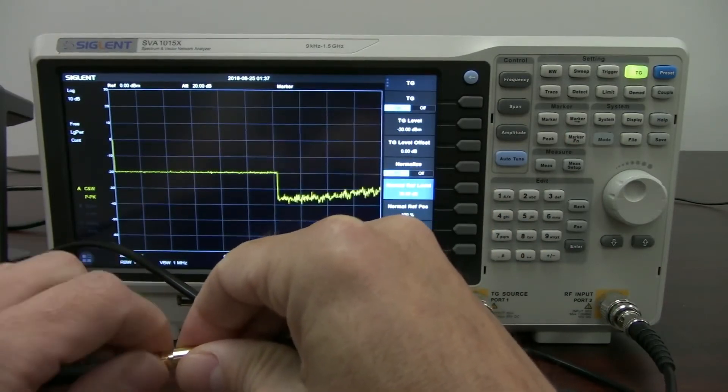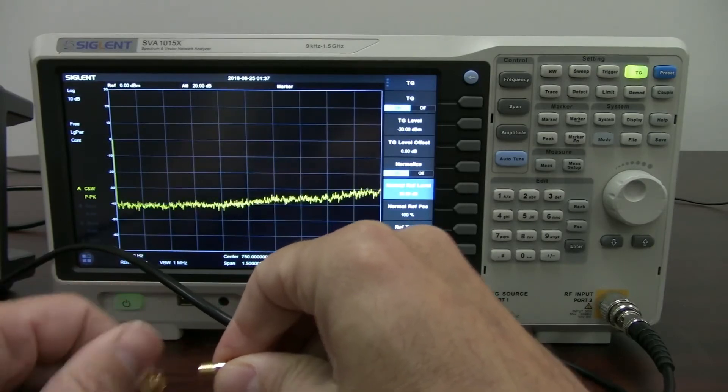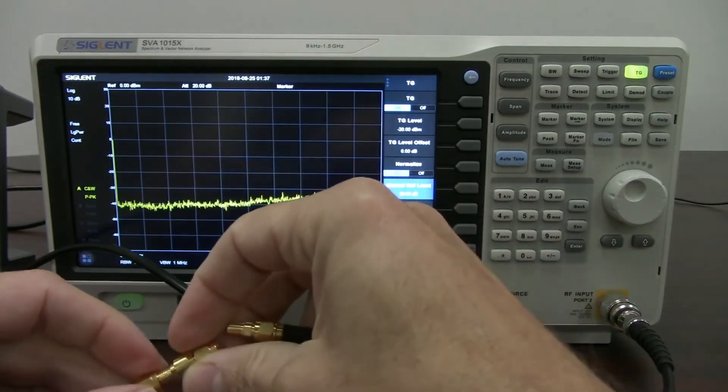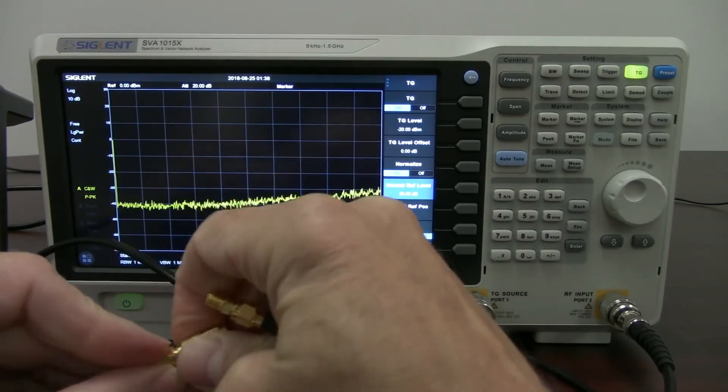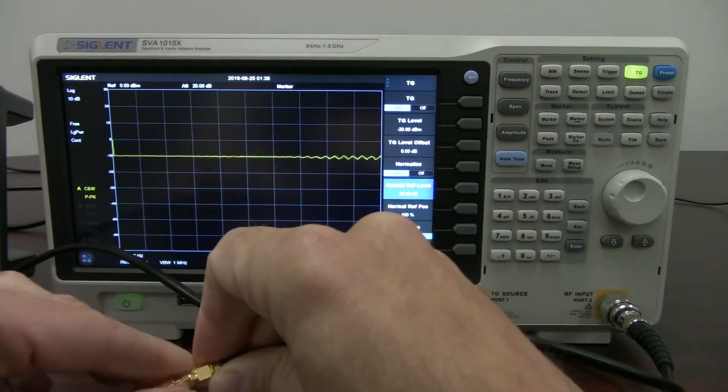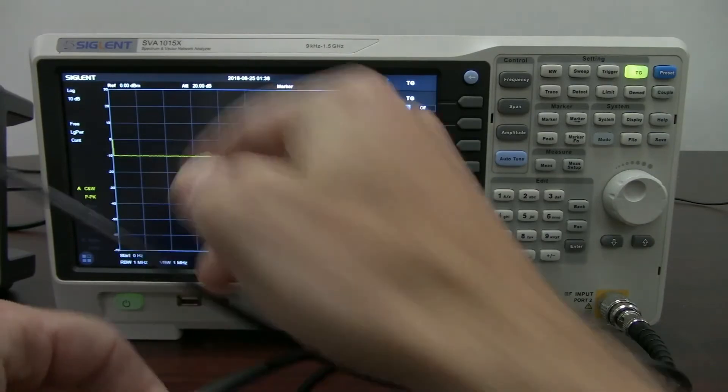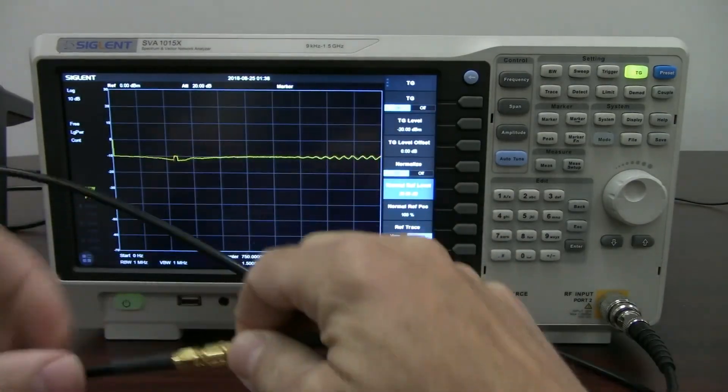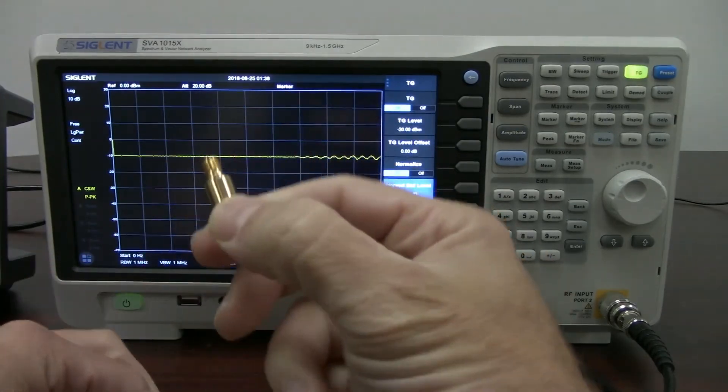And just replace that really quickly with this other one. Make sure that it is truly a 10 dBm attenuator. Here we go. And there we are. So we've got this at minus 10 dBm. So we now have characterized our attenuators, or at least verified that they are correct.